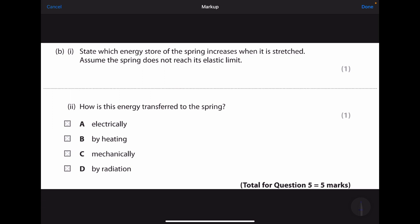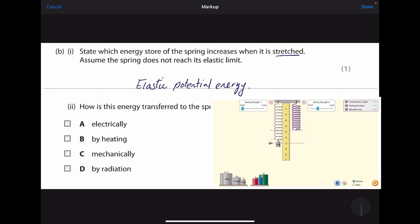State which energy store of the spring increases when it is stretched. Assume the spring does not reach its elastic limit. The keyword is 'stretched,' so it's elastic potential energy.